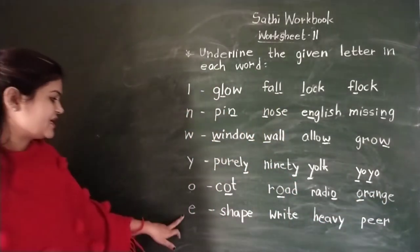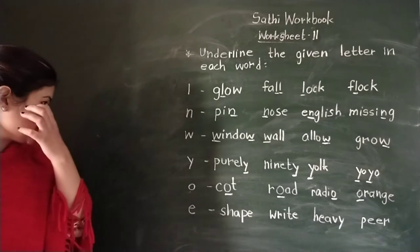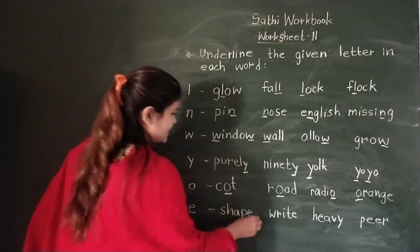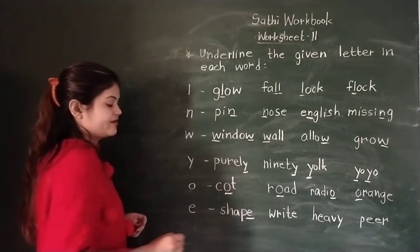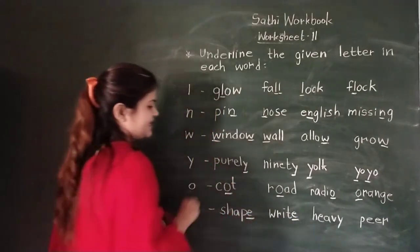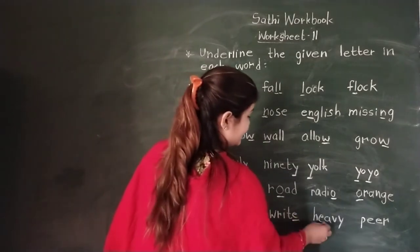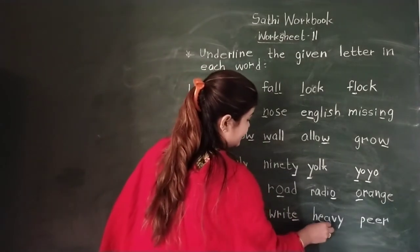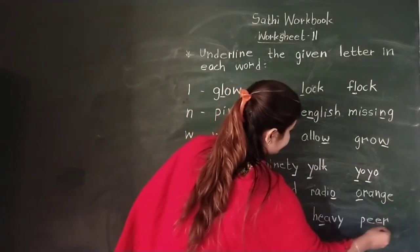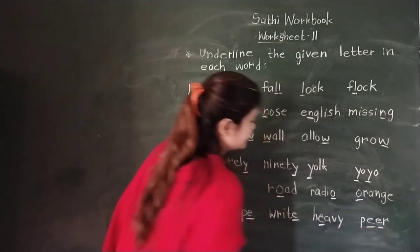This is letter E. In 'shape', this letter is E. In 'right', this letter is E. In 'heavy', this letter is E. And in 'peer', this letter is E.